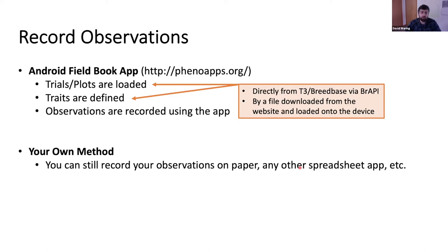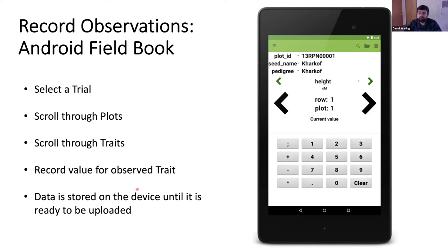All of your observations will be recorded directly in the tablet app. If you don't want to use the Android Fieldbook app, you can still use your own method for recording observations — recording on paper or using a different spreadsheet app and uploading trait values later. This screenshot shows the Android Fieldbook app: the user selects their trial, scrolls through plots using the big black arrows, cycles through traits using the green arrows, and records observations directly on screen. All data is stored on the device until it's ready to be uploaded into a database.